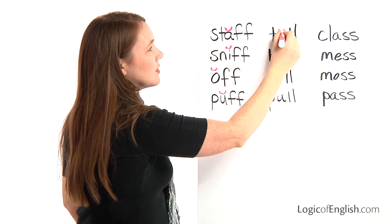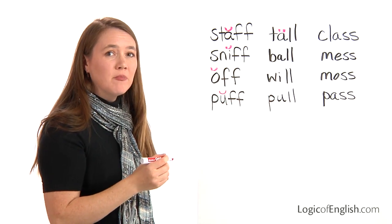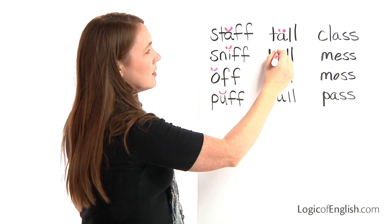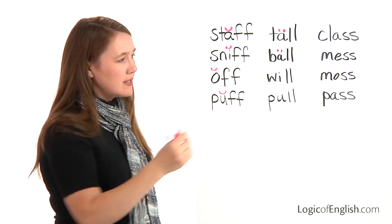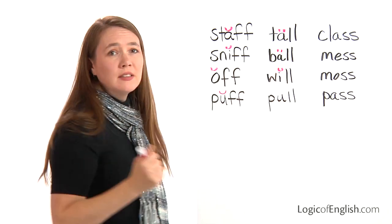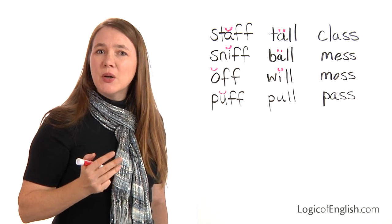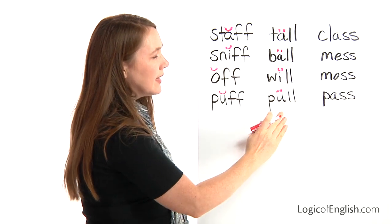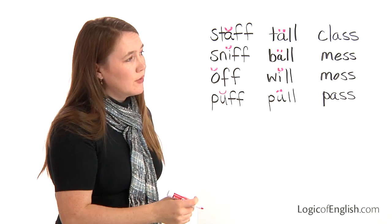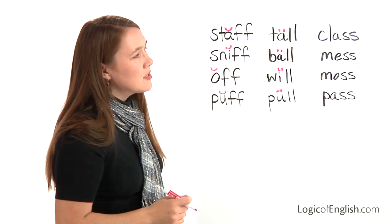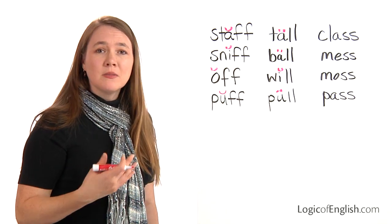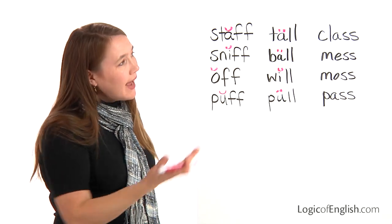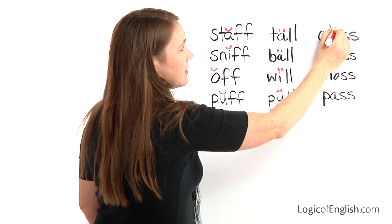You'll notice we're doubling the L's after broad and short sounds. And in words like class, mess, moss, and pass — you're right, we're doubling the S, and it's always after a short sound.